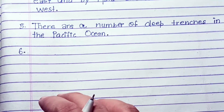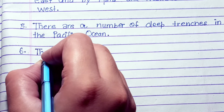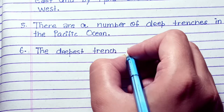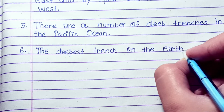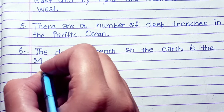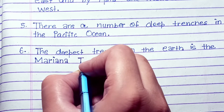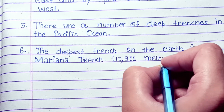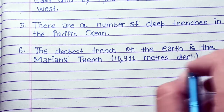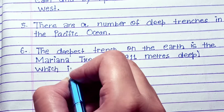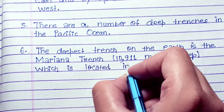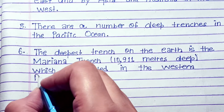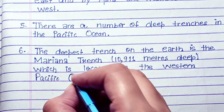There are a number of deep trenches in the Pacific Ocean. The deepest trench on the Earth is the Mariana Trench, which is 10,911 meters deep and is located in the western Pacific Ocean.